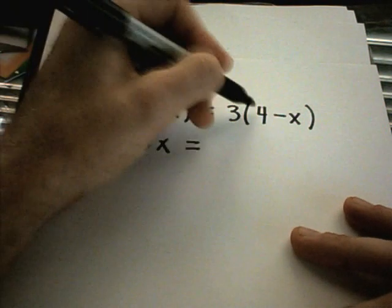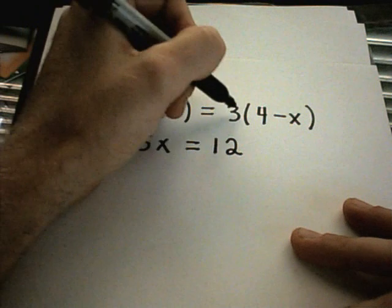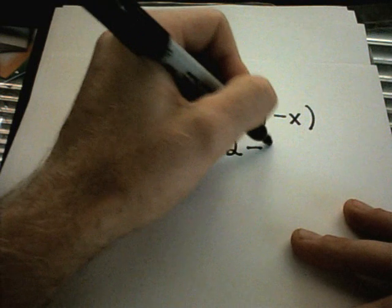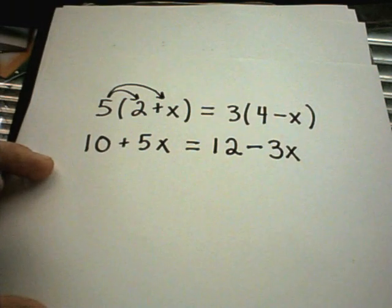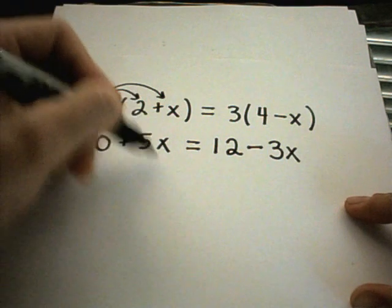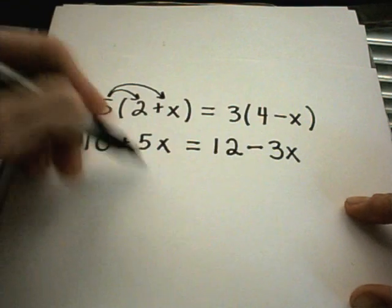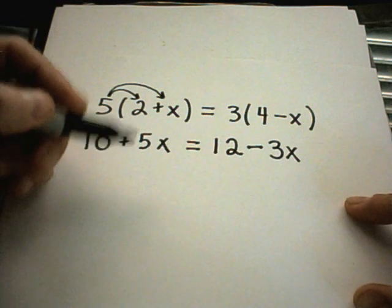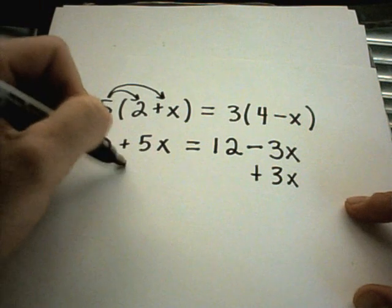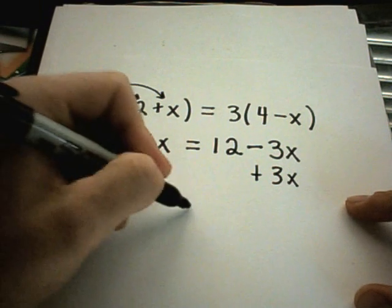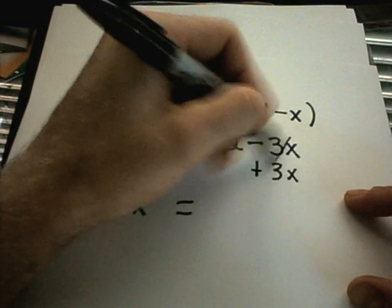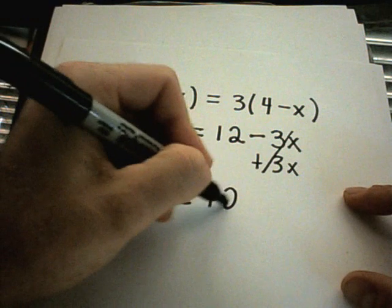On the right side I'm going to get 3 times 4, which is 12. I'll get 3 times negative x. And again, a positive times a negative is a negative. 3 times x is 3x. And now I'm going to get my x's on the same side. So I could either move the x's to the right side or I could move the x's to the left side. I'm going to move the x's to the left side, so I'm going to add 3x to both sides. So I'll have 10 plus 8x, and now the x's are gone on the right. I just have positive 12 hanging out.